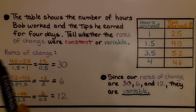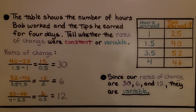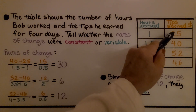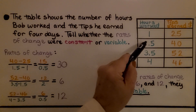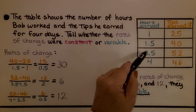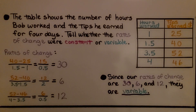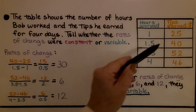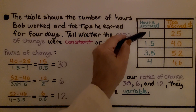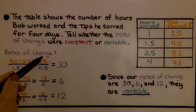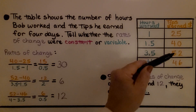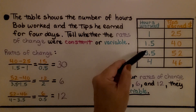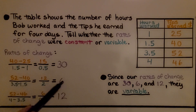The next table shows the number of hours Bob worked and the tips he earned for four days. Tell whether the rates of change were constant or variable. He worked 1 hour and earned $25. Then 1.5 hours and earned $40. Then 3.5 hours and made $52. Then 4 hours and made $46. We do the dependent variable over the independent variable: 40 minus 25 is 15, divided by 1.5 minus 1 which is 0.5, giving a rate of change of 30. Then 52 minus 40 is 12, divided by 3.5 minus 1.5 which is 2, giving a rate of change of 6.